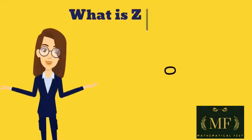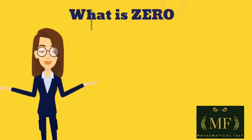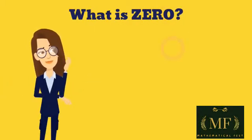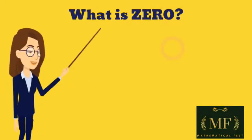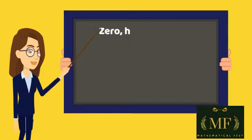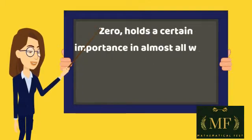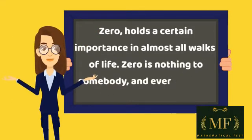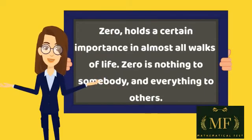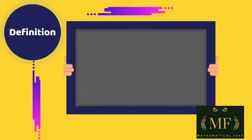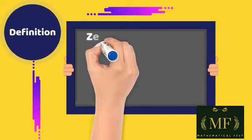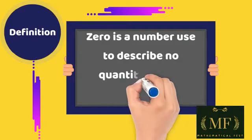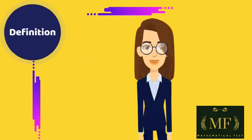What is zero? Zero holds a certain importance in almost all walks of life. Zero is nothing to somebody and everything to others. It's a game of perception and perspective. However, in mathematics, zero is a number used to describe no quantity or null quantity.